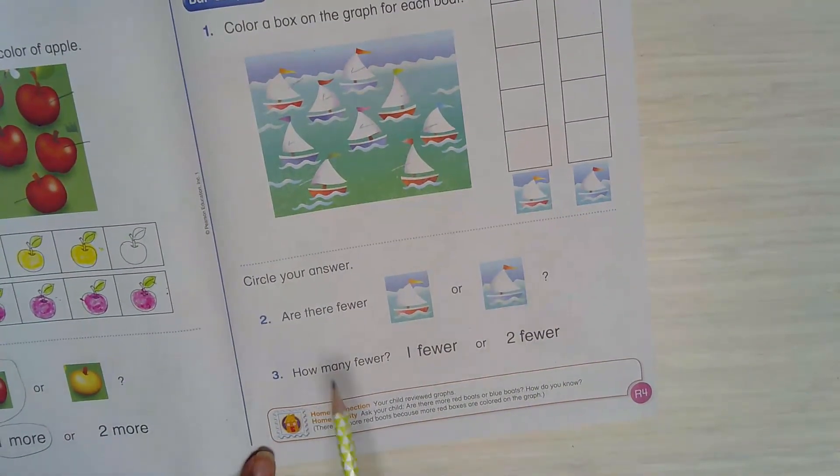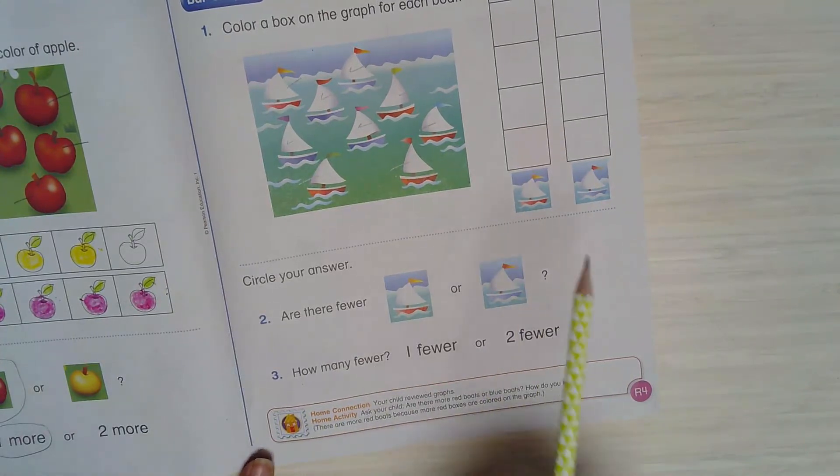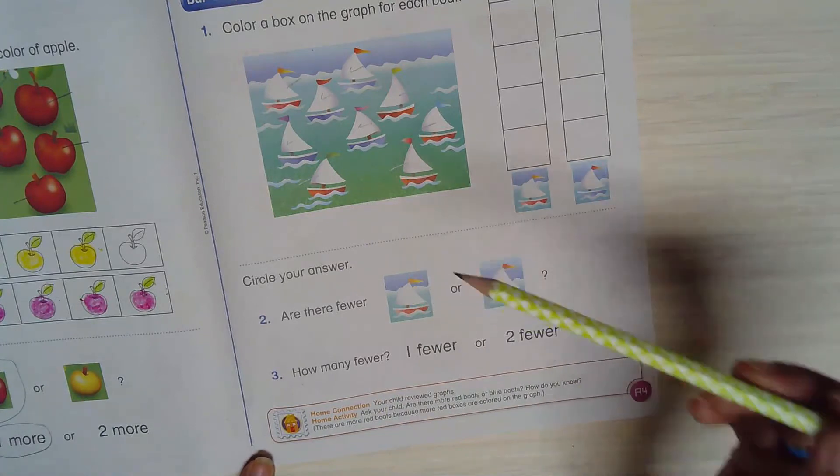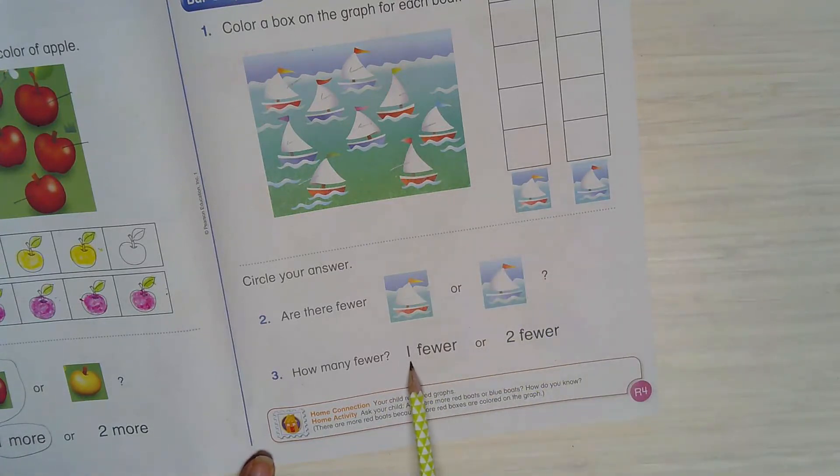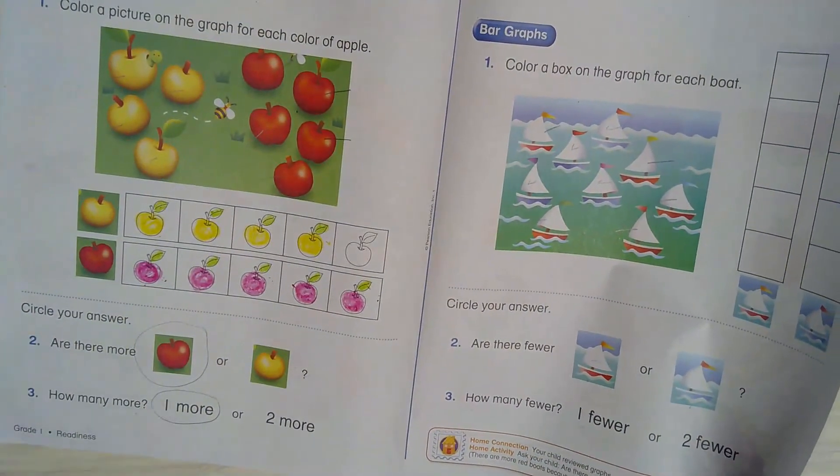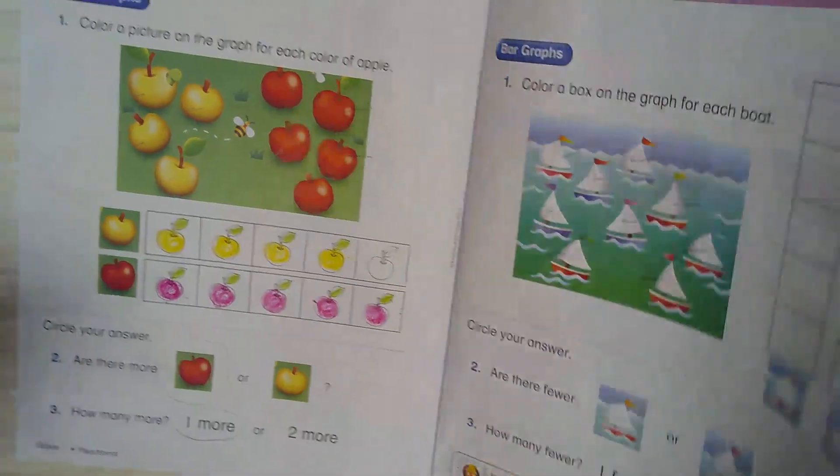And then you're gonna answer the second part - how many fewer? So how many that choice you had fewer? Is it one boat fewer or two boats fewer? Okay, so that will be yours. Remember with the apples, we colored more, how many more apple. But here, fewer means less.